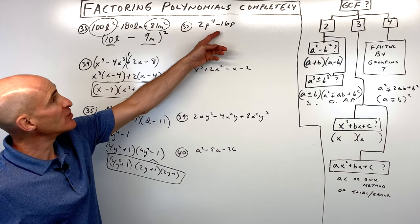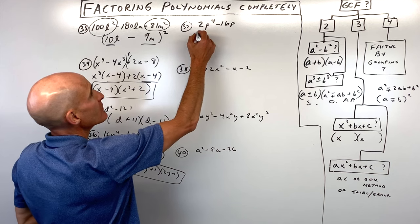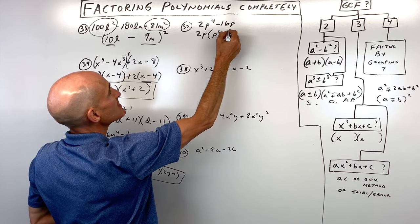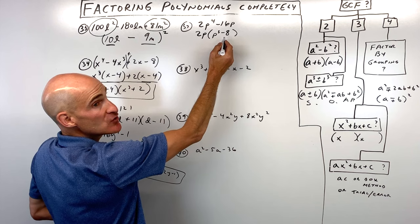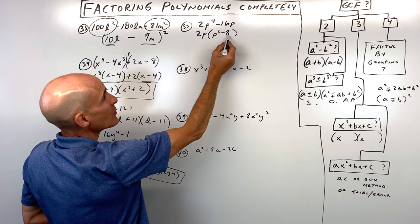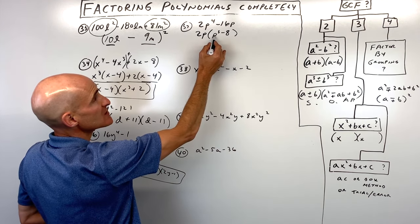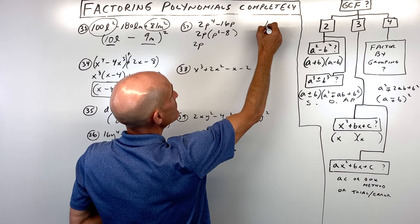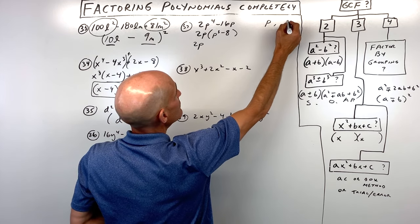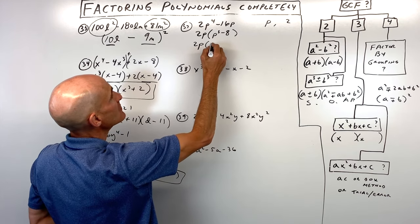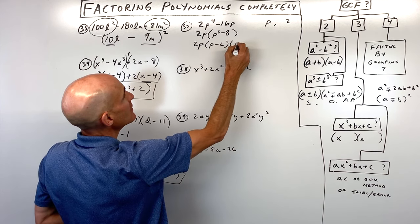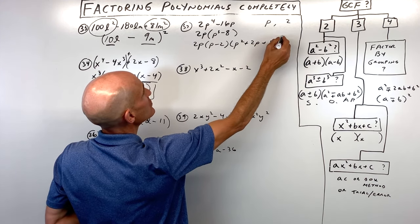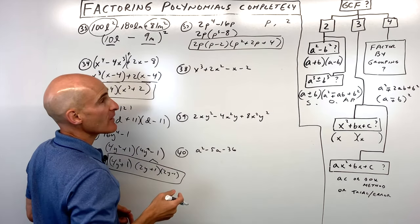Number thirty-seven: first look for a greatest common factor — we can factor out 2p, giving 2p times p cubed minus 8. This is a difference of two cubes since 8 is 2 times 2 times 2. In the formula, a is p and b is 2, so this factors to 2p times p minus 2 times p squared plus 2p plus 4. That's fully factored — notice how we needed both the GCF step and then the difference of two cubes step.